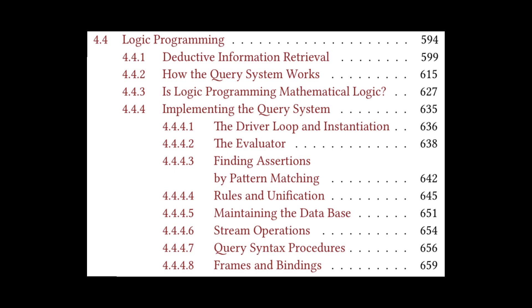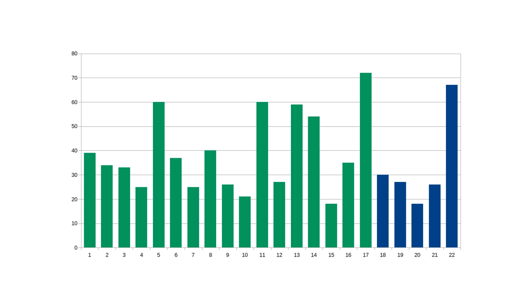If you look at the page numbers, this is quite a long chapter. A chart graphing the number of pages by chapter shows that section 17, corresponding to Chapter 4.4, is by far the largest chapter section at 72 pages, followed by the final chapter section 5.5 at around 67 pages.